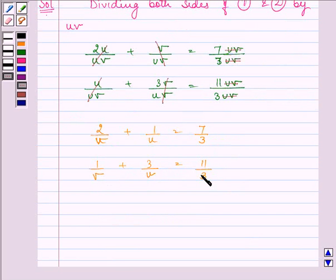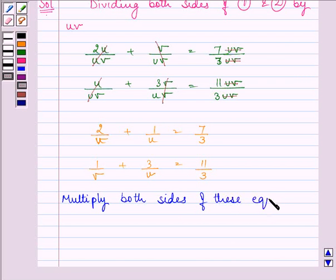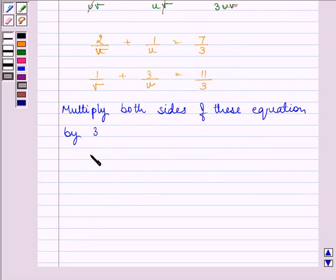Now, to make it more simpler, let us multiply both sides of these equations by 3. And let us say that 1 by v is equal to x and 1 by u is equal to y.